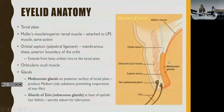Eyelid anatomy: the most important structures are the tarsal plate, which adds structural integrity to the eyelid, and the orbital septum extending upward from it. The orbital septum is critical when discussing eye infections, as it forms a barrier to the front of the orbit. Infections in front of or behind it have very different outcomes and clinical presentations. There are also meibomian glands within the tarsal plate that produce meibum, and glands of Zeis — sebaceous glands around the eyelash follicles.